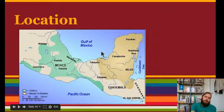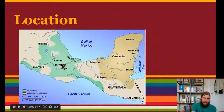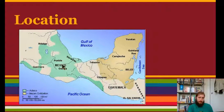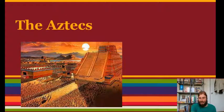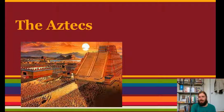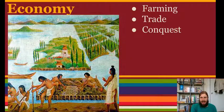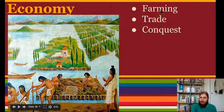Now, the Aztecs lived just west of the Mayans. I need you to label the Aztec and the Mayan areas on your map. The Aztecs borrowed a lot of things from the Mayans, so think about these similarities as we go through. Economy — how did they make their money? They made their money by farming, by trade, and by conquest.